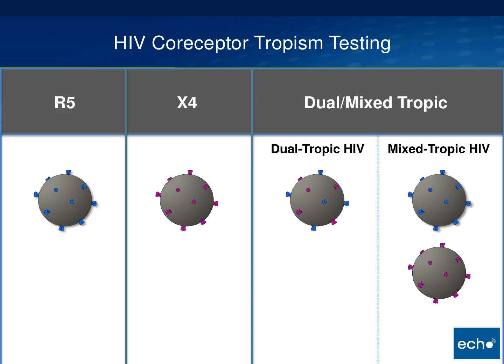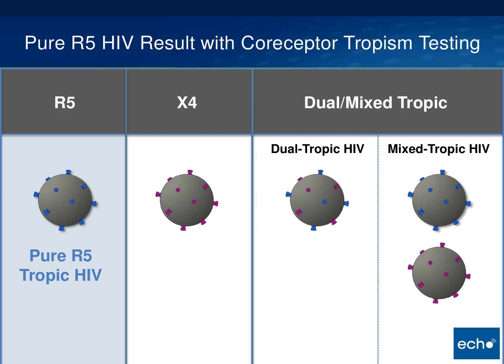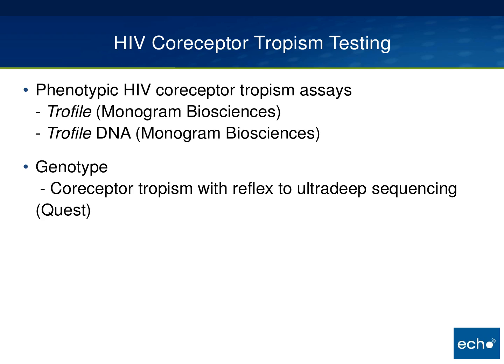What you can get with co-receptor tropism testing is really one of three results: the test will tell you that you either have R5 virus, X4 virus, or dual or mixed tropic virus. What we're hoping to find is pure R5 virus — that's the holy grail for being able to use a CCR5 antagonist. You're looking for pure R5 virus and no evidence of X4, dual, or mixed tropic virus.